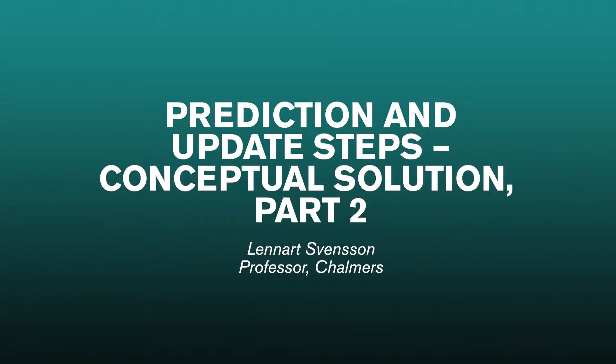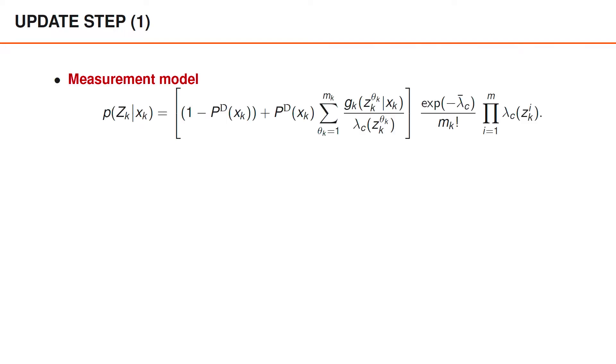In an earlier video, we presented general update equations for single-object tracking. Since those equations are general, we can of course use them here. Still, we now assume that the predicted density has a specific form, and we will actually re-derive the update equations to show how to express the posterior in the desired form.